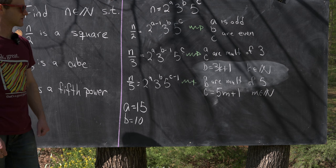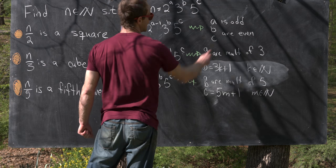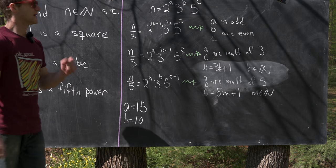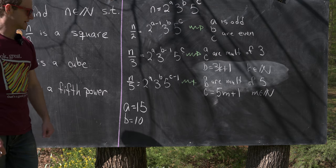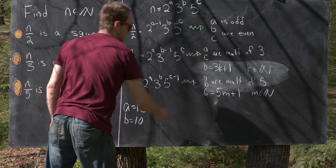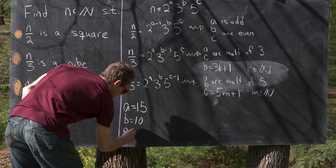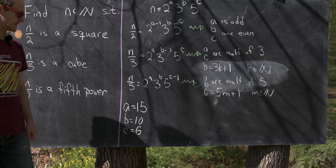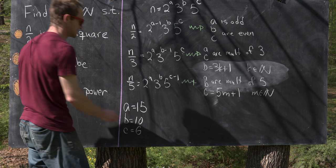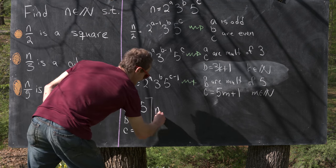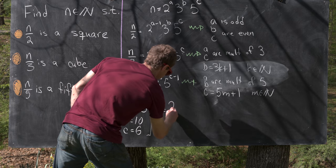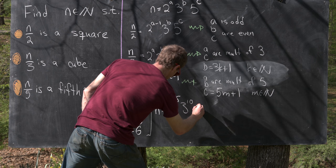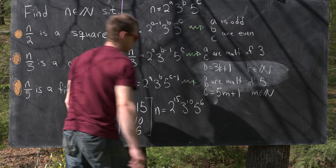Then finally, we can do the same thing for c. c must be even — a multiple of two — and has to be a multiple of three, so it has to be a multiple of six. But it also has to be one more than a multiple of five. Six is already one more than a multiple of five. So we have a equals fifteen, b equals ten, and c equals six. That tells us n equals two to the fifteen, times three to the ten, times five to the six.